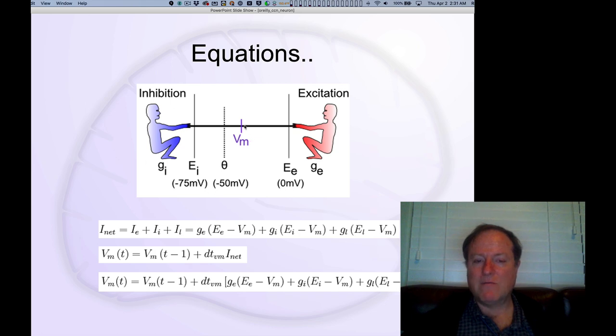The flag location moves over time. It starts out where it was last time. So the current time membrane potential is equal to the membrane potential at the previous time step, plus some time constant, which we write as dt.